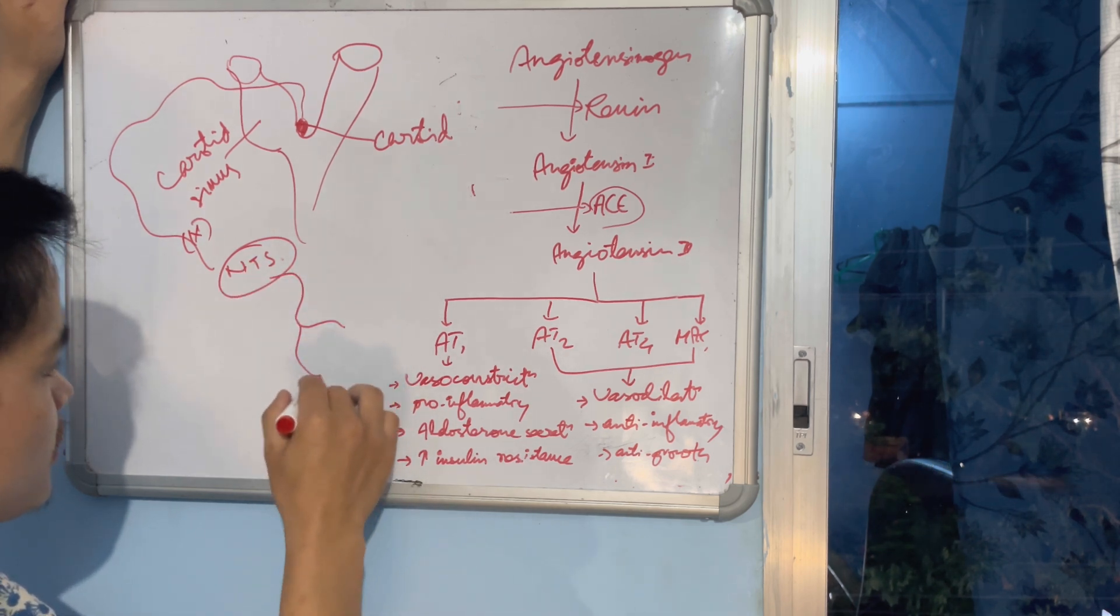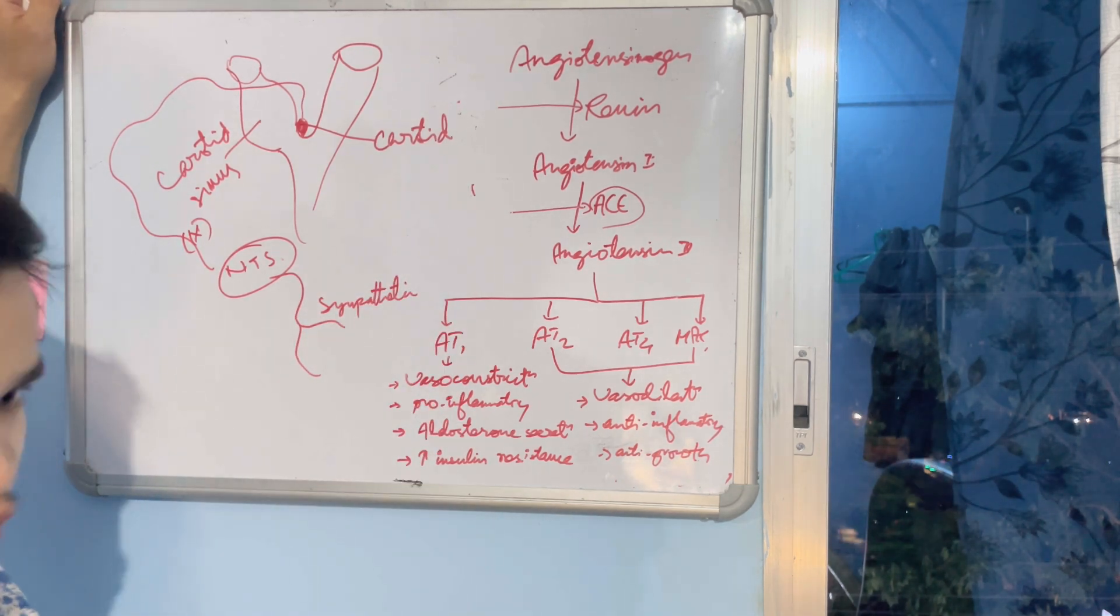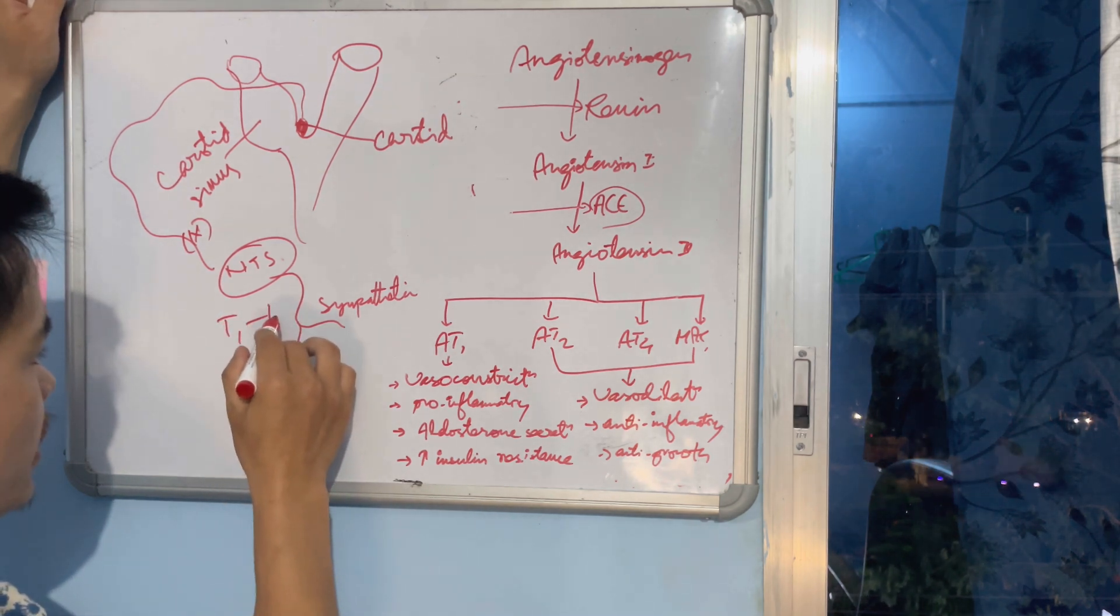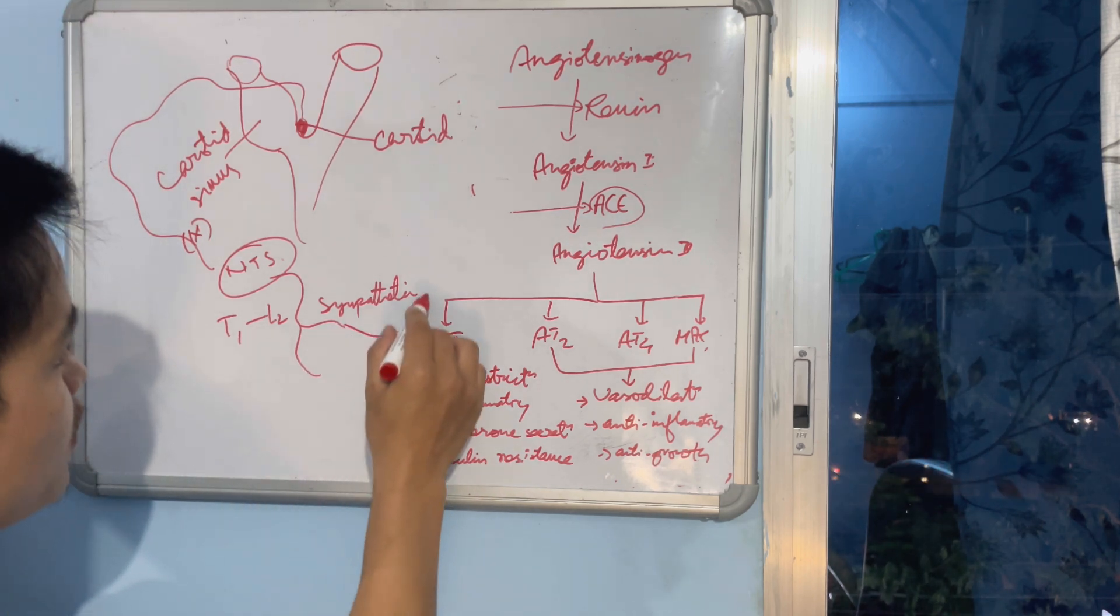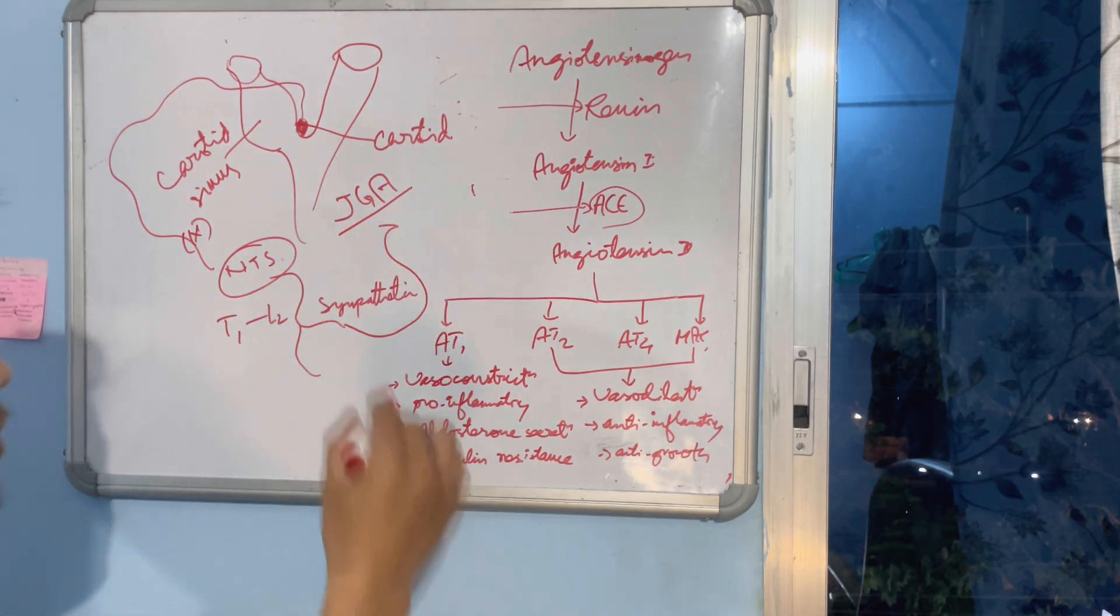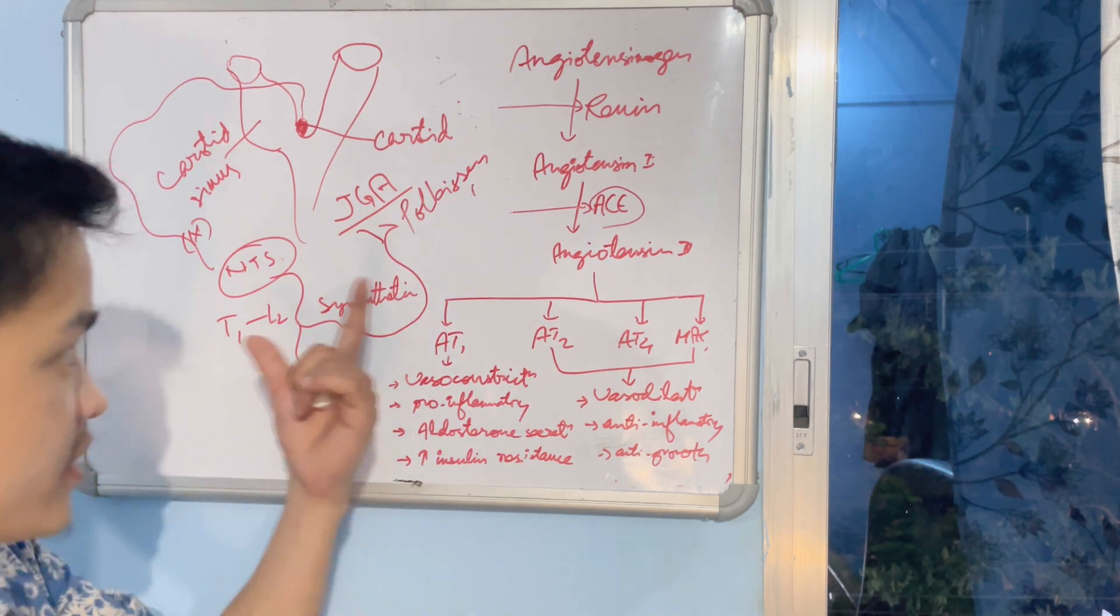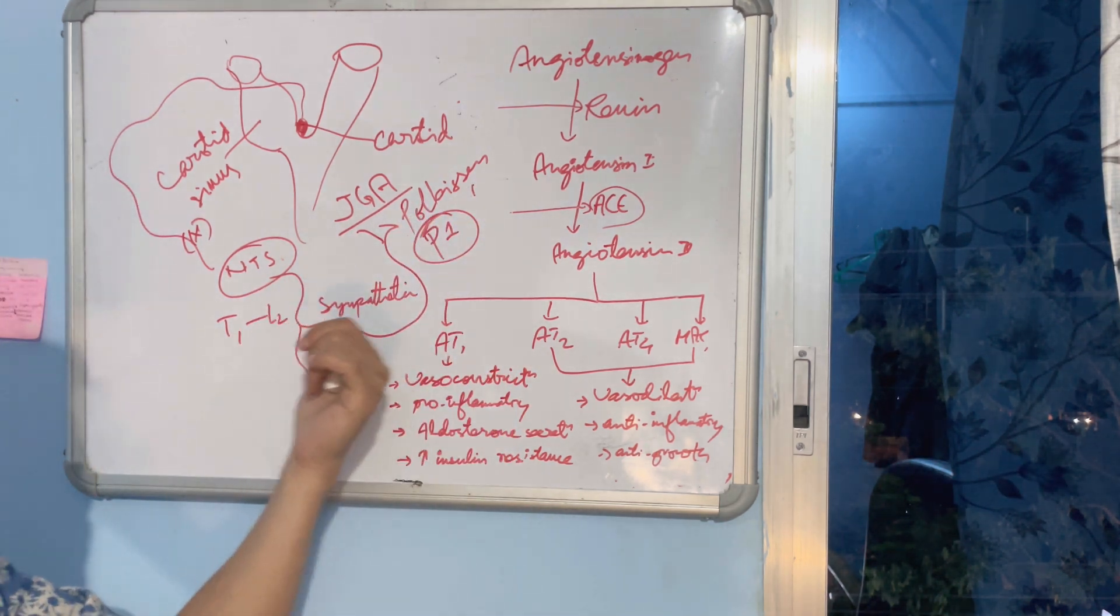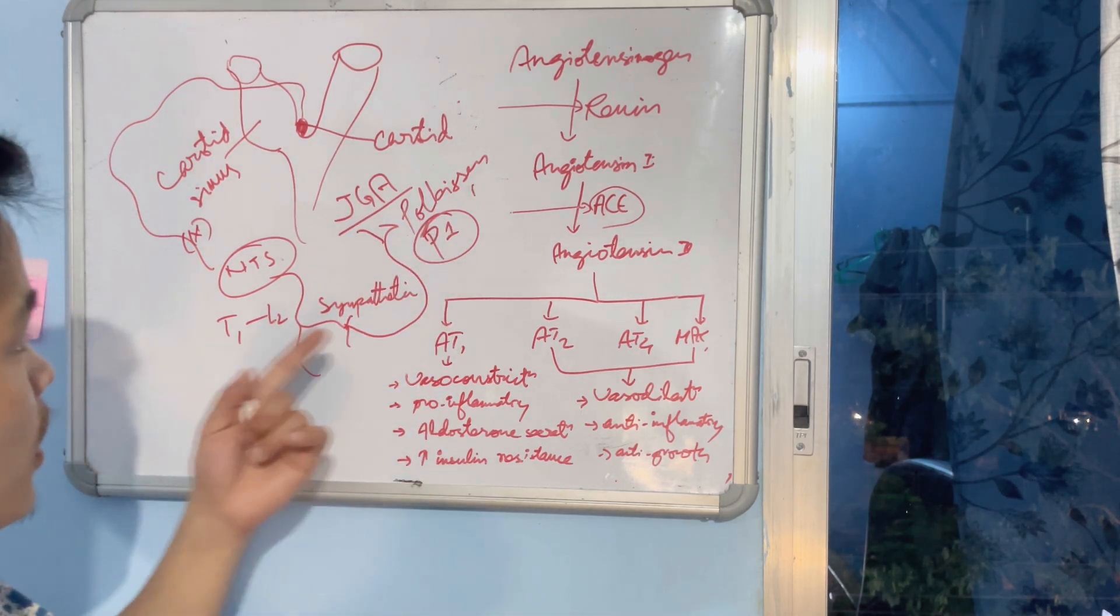And from here it will release systemic sympathetic outflow, and you know sympathetic outflow is through thoracolumbar, that is T1 to L2, sometimes L3 also. This will work at JGA at juxtaglomerular cells again. Juxtaglomerular cells have beta-1 receptors, and this sympathetic outflow will stimulate juxtaglomerular cells, and these cells will release renin. That is second condition.